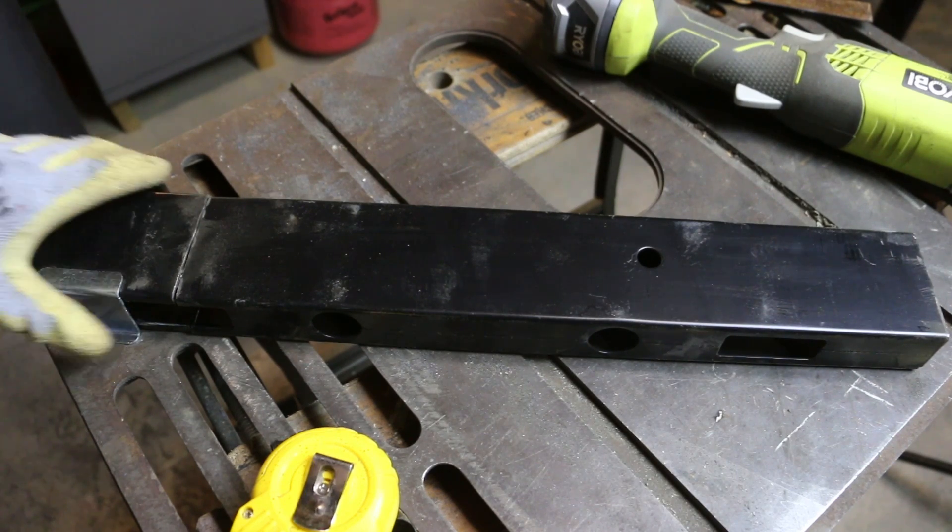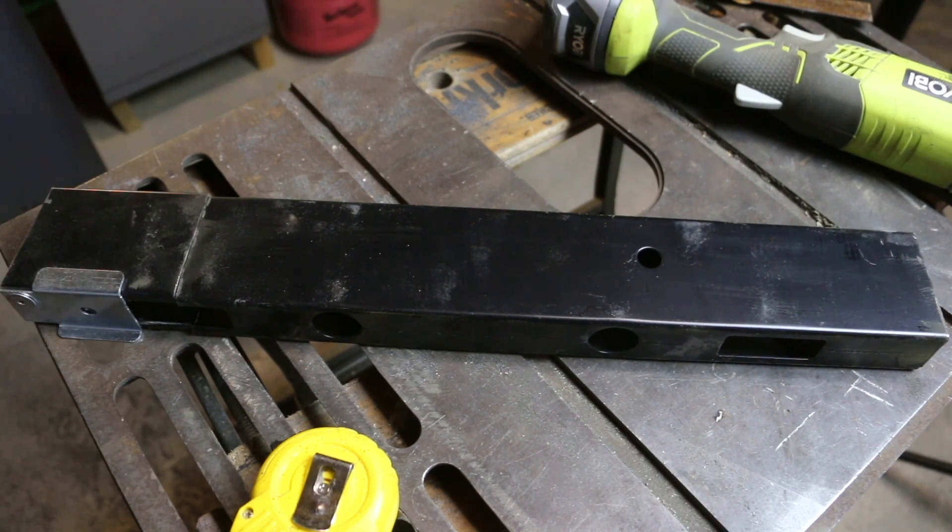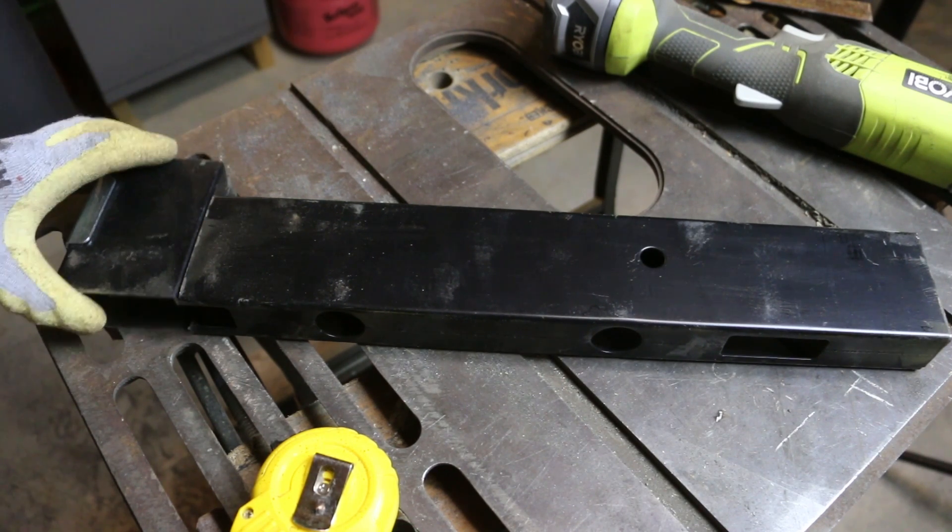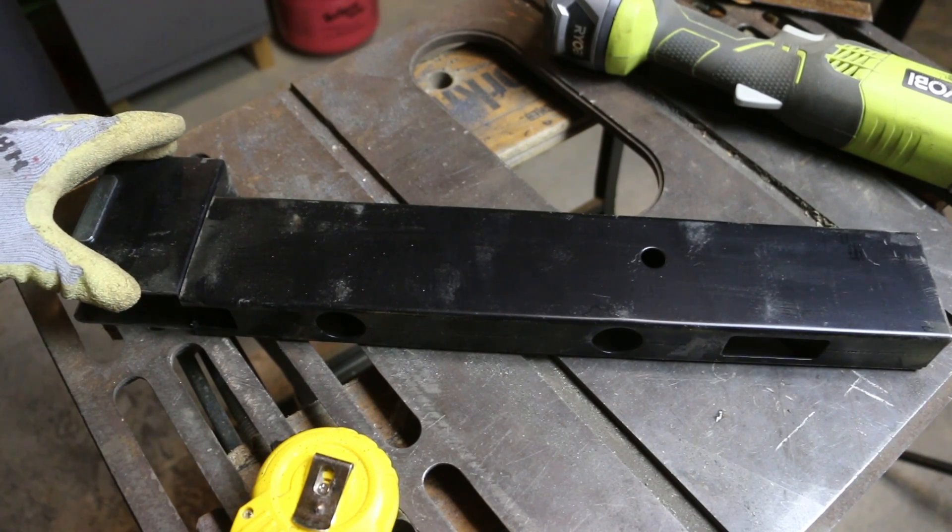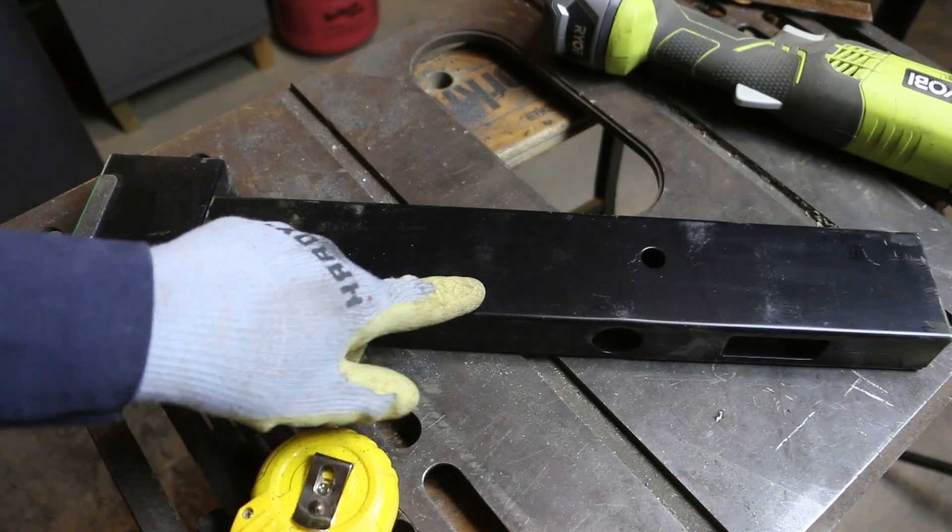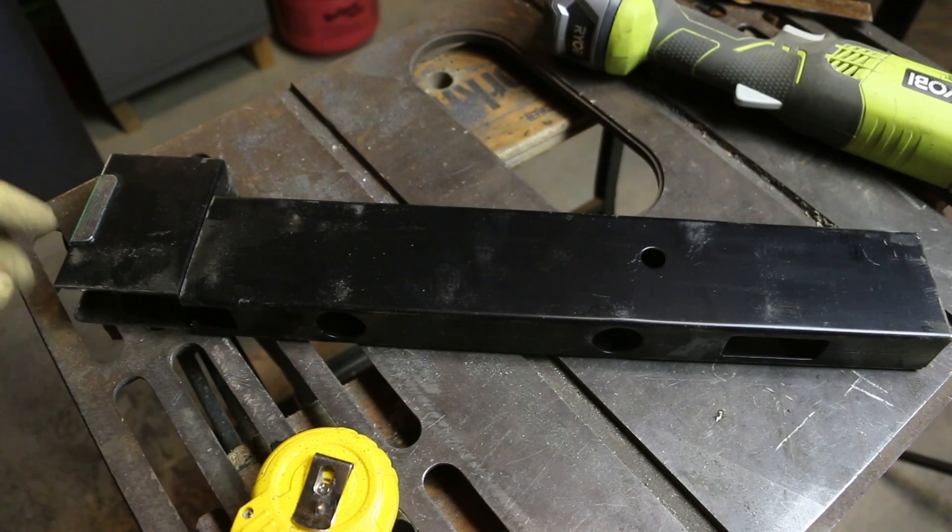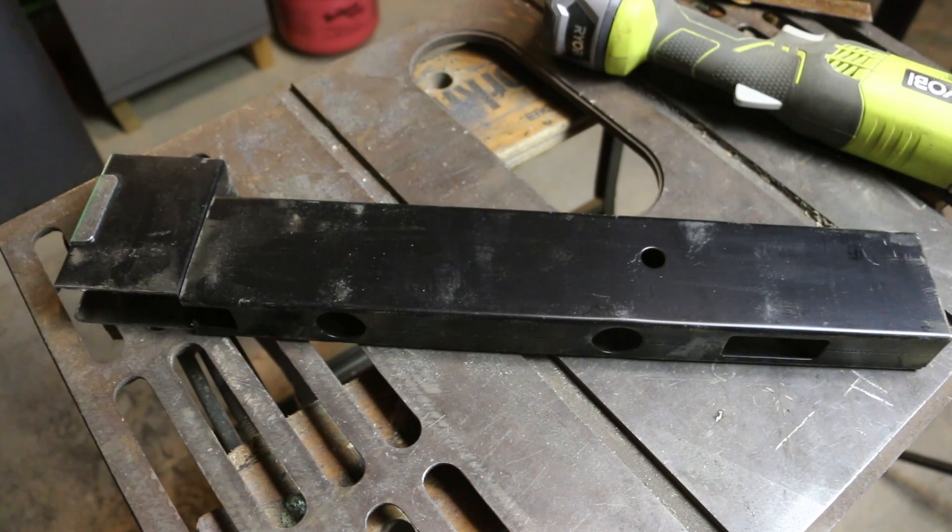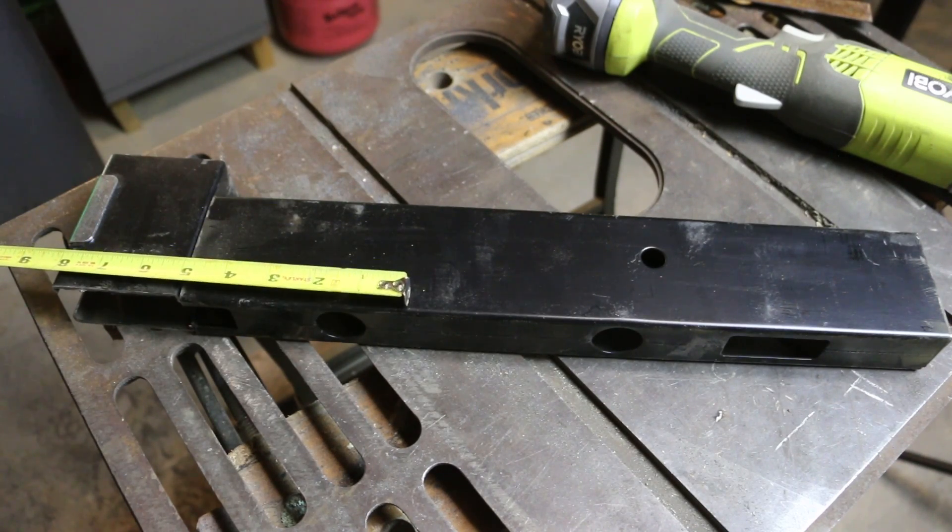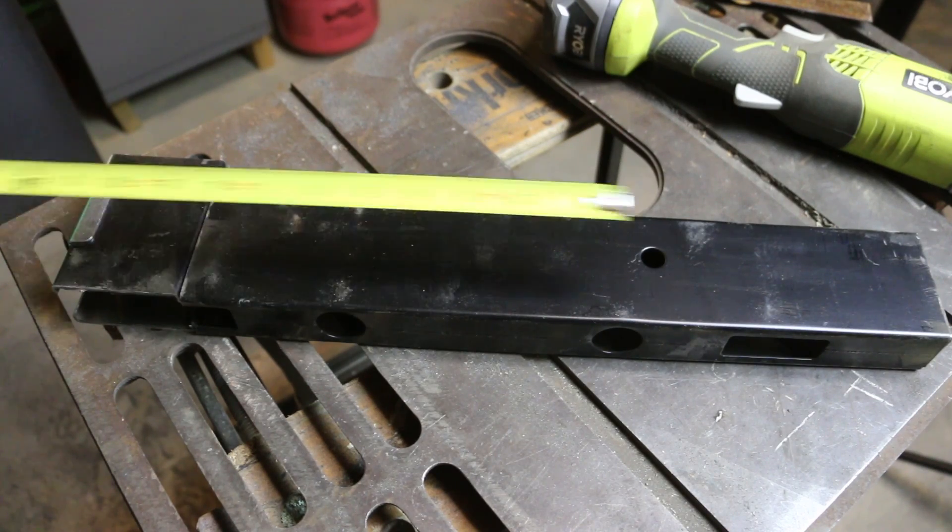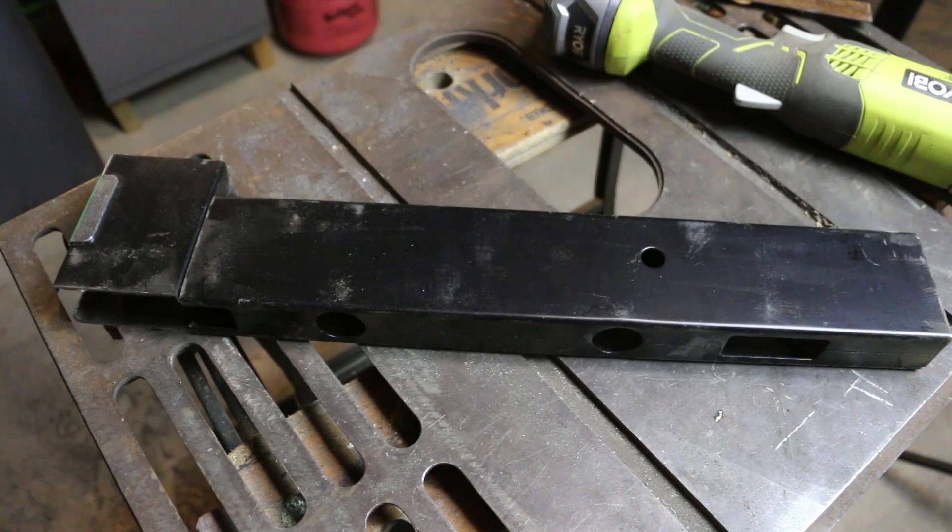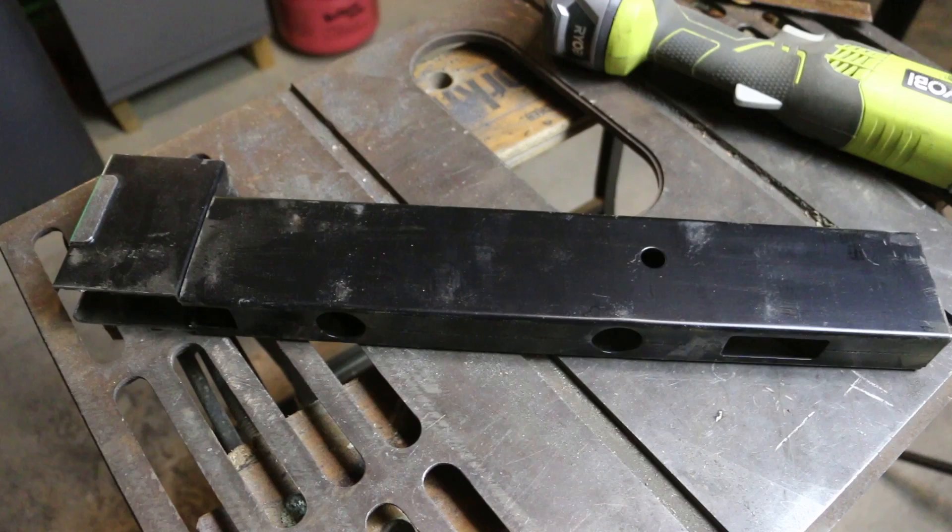The rocket stove principle we're going to be using for this build is the 1-2-3 ratio, which is one for the height of the fire box, two for the length of the fire tunnel, and then three for the height of the riser. So using a 4-inch dimension: 4 for the height of the fire box, 8 for the length of the fire tunnel, and then 12 for the height of the riser. And that'll use my 20-inch blank here just about perfectly.